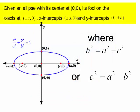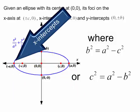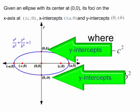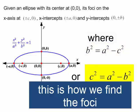Well, given an ellipse, that its center is at (0, 0), and its foci are on the x-axis (±c, 0), which means I go to the right c and to the left c. And the x-intercepts are (±a, 0), and the y-intercepts will be (0, ±b). The equation of this ellipse is x²/a² + y²/b² = 1 where b² = a² - c². I could also write c² = a² - b² just by doing a little bit of algebra and solving for c².